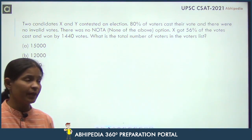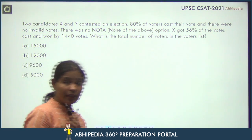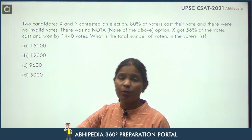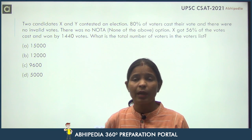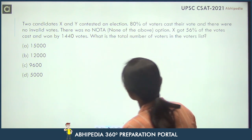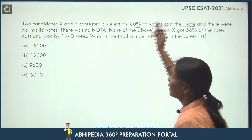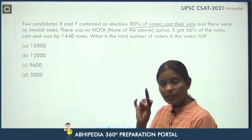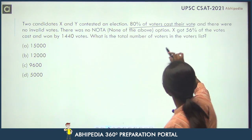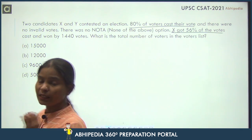Ab dekhe question yaha pe kya tha: two candidates X and Y contested an election. Election pe based questions kaafi important rehte hain, dhyan rakhna — different different type ke questions aate hain election ke, to sabhi aapne practice karne hai. Two candidates X and Y contested in an election. 80% voters cast their votes and there were no invalid votes — sirf 80% ne votes cast ki hai. X got 56% of the votes cast.